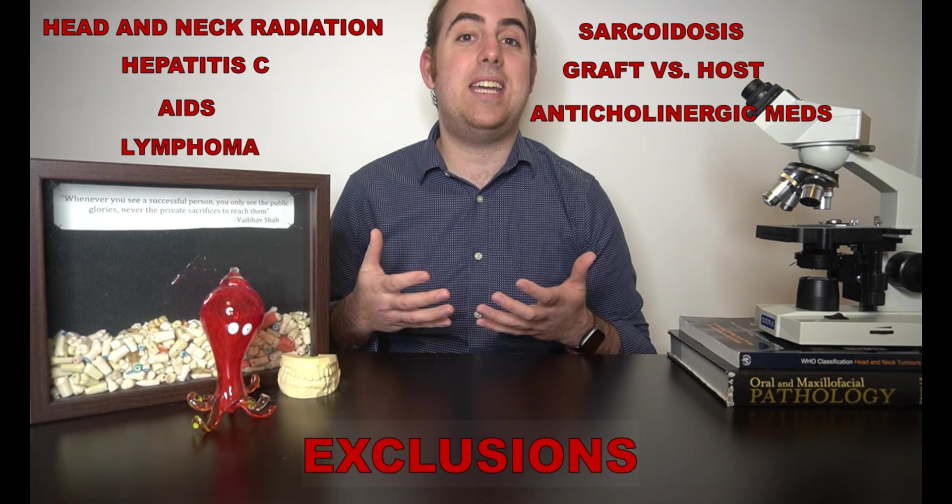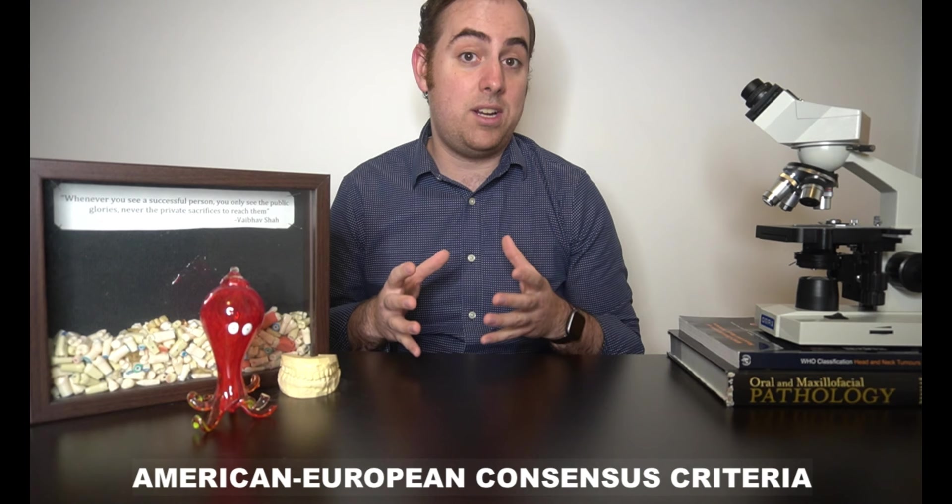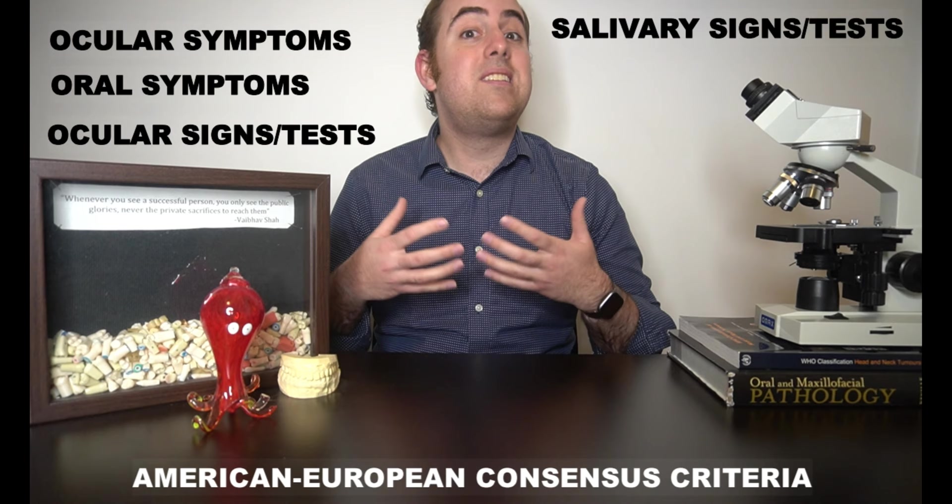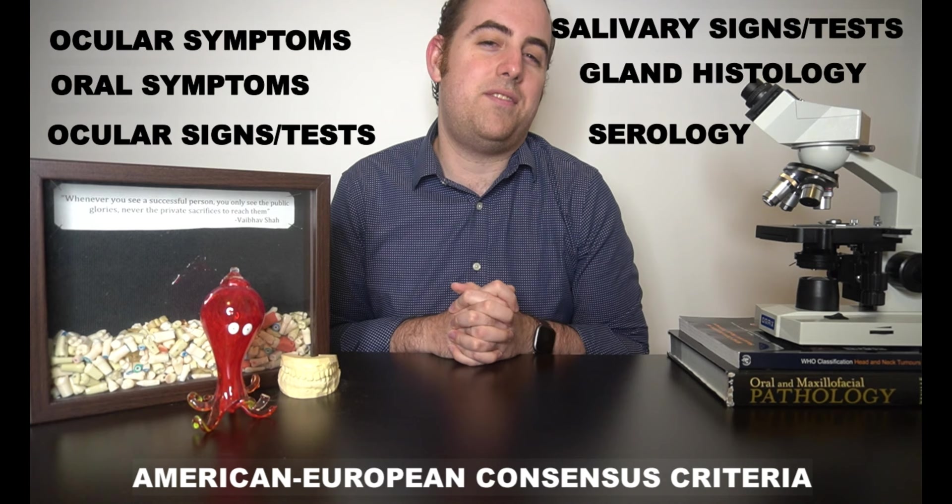Assuming that none of these exclusion criteria apply you can begin to evaluate a patient using six categories. The first is ocular symptoms experienced by the patient, oral symptoms experienced by the patient, ocular signs, salivary gland signs, histopathology, and finally serologic testing of the blood.